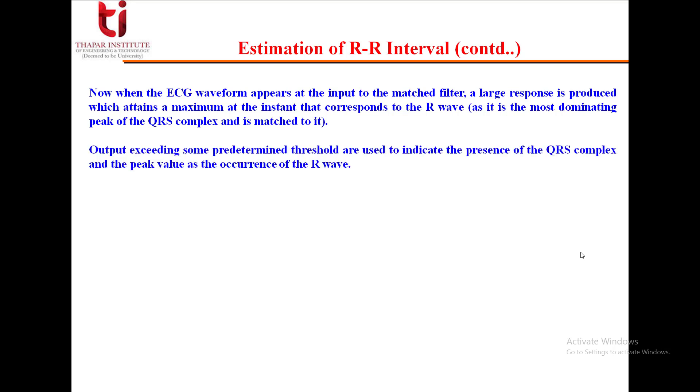The output exceeding some predetermined threshold are used to indicate the presence of the QRS complex, and the peak value as the occurrence of R wave. The duration between the successive peaks of the output of the matched filter can be taken as the RR interval.